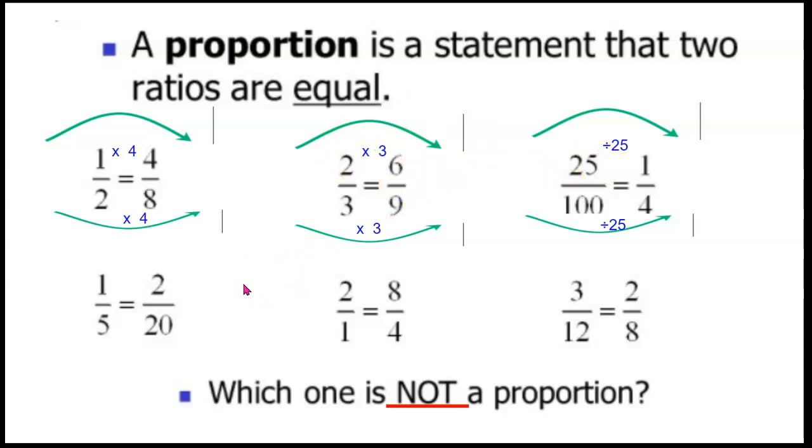Let's try the next one: one-fifth and two-twentieths. Well, in order to get from one to two I'm going to multiply by two. But in order to get from five to twenty I'm actually going to multiply by four. So these two do not have the same relationship between the two ratios. Therefore, this is not a proportion. Let's try the next one: two over one and eight over four. We know that two times four is eight and one times four is four. Therefore, they have a relationship between the two ratios. They are equivalent and they are a proportion.